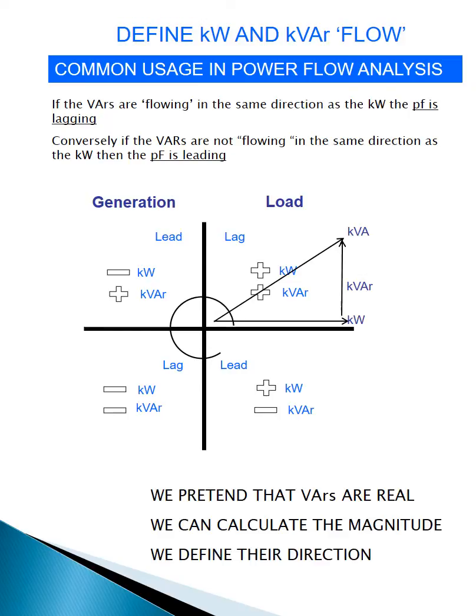So we have the vector definitions that allow us to pretend VARs are real. We can calculate the magnitude by using mathematics on the only items that we can physically measure, namely the volts, the amps, and the angle between them, and now we have defined their direction.